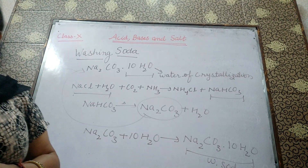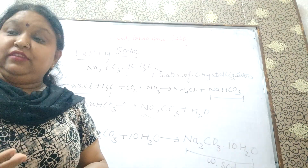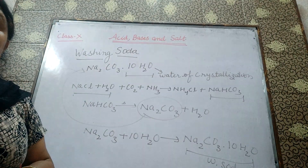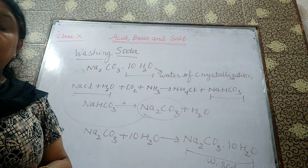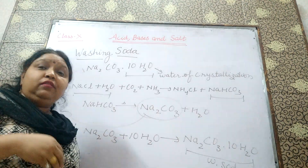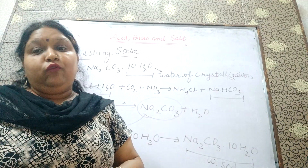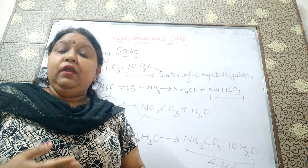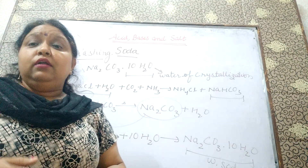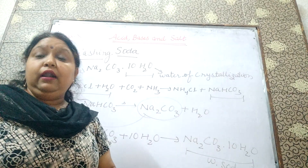Washing soda is used as a cleansing agent. For cleaning purpose, at our home, we are using it for cleaning action. A very important use is it is used for removing permanent hardness of water. What is hardness? You must have heard about two types of water: one is soft water, which does not contain salts mixed in it, and another one is hard water, which contains the carbonate and bicarbonate of calcium and magnesium. They are all called hard water.